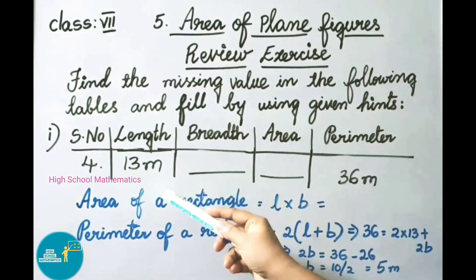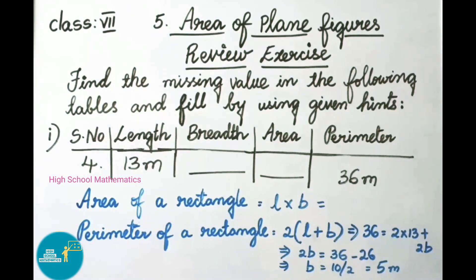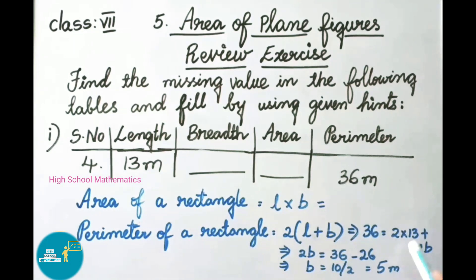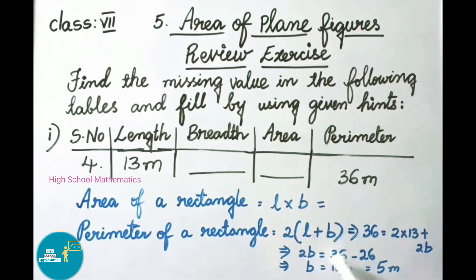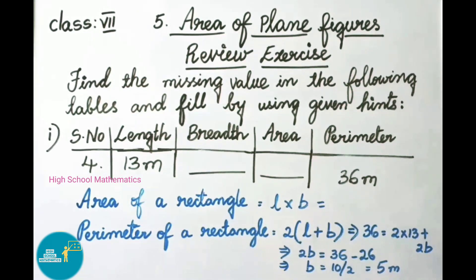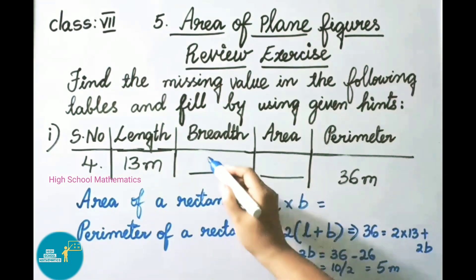For the fourth one, they have given length 13 meters and perimeter 36 meters. We have to find breadth and area. Using the perimeter formula: 36 = 2 × 13 + 2B, so 2B = 36 − 26 = 10, giving breadth = 10 ÷ 2 = 5 meters. Let us write 5 meters in the blank.